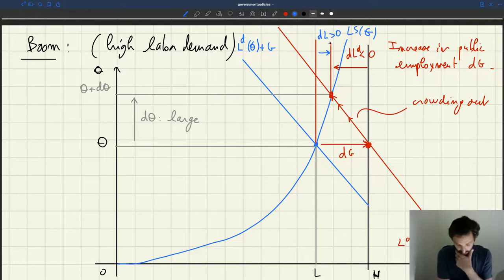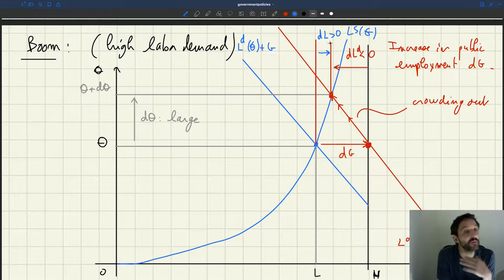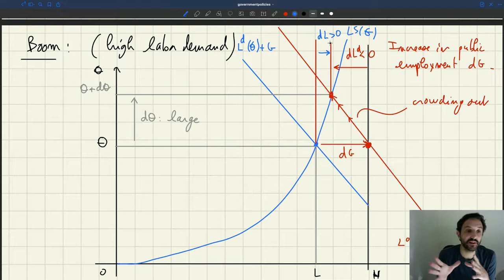So basically in good times what happens is that, you know, when unemployment, I mean, it makes sense, right? Imagine unemployment is zero. If there are no unemployed workers, all the workers that move to the public sector, they have to come from somewhere because there are no unemployed. So they have to come from the private sector.